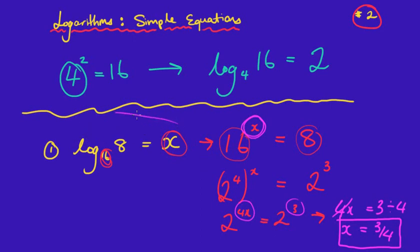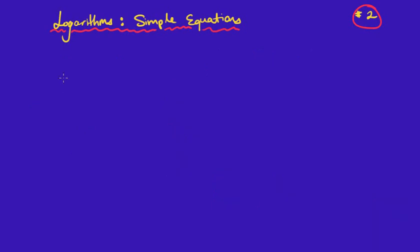So in this case what we're doing, we're starting with an actual logarithm, we're converting it over to index form, and then we're solving it. Let's have a look at a second example.